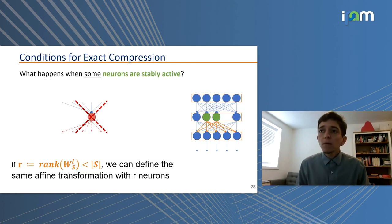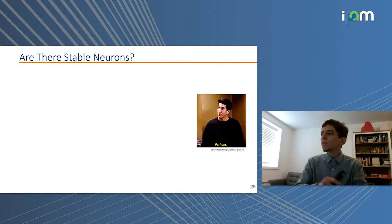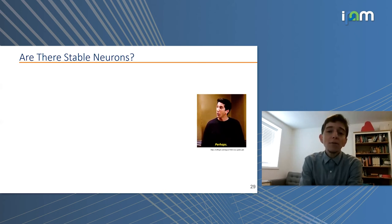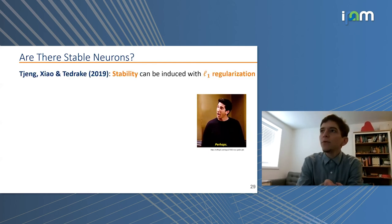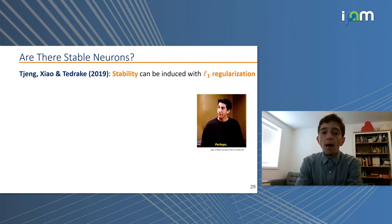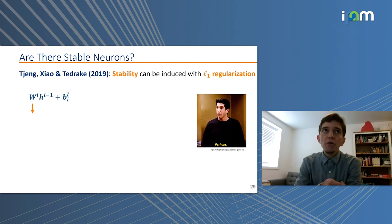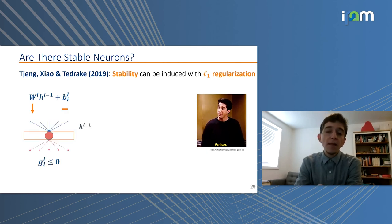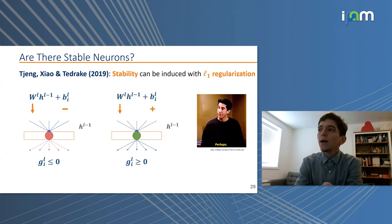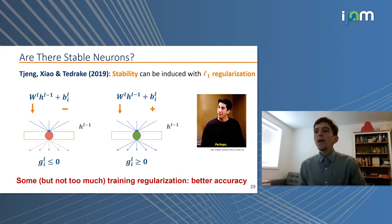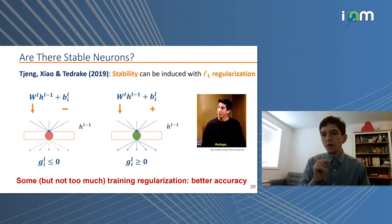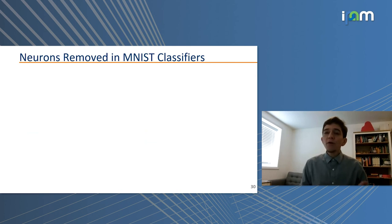The important question now is: are we going to find stable neurons in practice? It turns out that using L1 regularization can induce stability. L1 regularization drives weights down, and if the bias is negative we're likely to get a stably inactive neuron; if the bias is positive we're likely to get a stably active neuron. We also know that moderate regularization generally improves accuracy of the trained neural network.